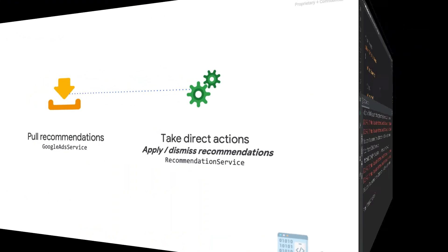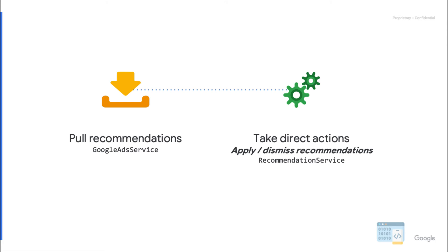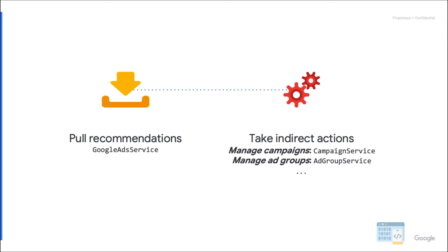All the scenarios that we discussed so far take actions based on recommendations directly from the recommendation service. One alternative is to take indirect actions by using other services such as the campaign service or the ad group service. There are a few things you should consider before developing this kind of solution. Recommendations can be applied using customized parameters, so there is usually no need to use other services if recommendations need to be refined. It is much more costly to manage recommendations using services other than the recommendation service. The optimization score and eligible recommendations are not updated instantaneously — it can take a few days for indirect actions to be fully taken into account. It also makes it more challenging for Google to enhance the accuracy of future recommendations.